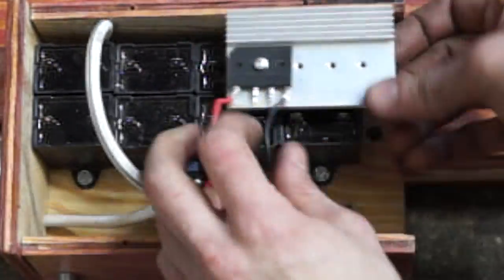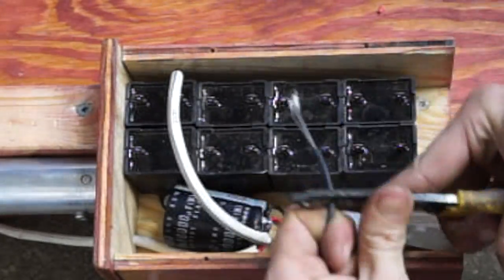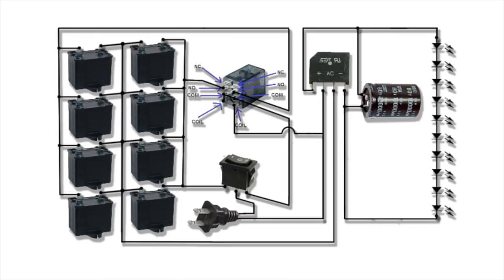Which is also connected to the positive and negative output leads of the rectifier. That completes the DC part of the circuit. Now it's time to wire up the motor run capacitors. Taking another look at the schematic, when the dual position switch is in the low mode, only half of these capacitors will be active.